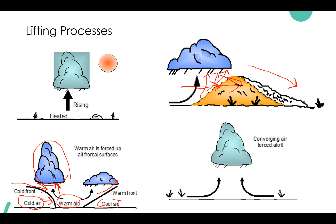In the bottom right we show low-level convergence. You clearly see arrows coming in from both directions. The air meets in the middle and then rises. As these two airstreams converge, the air rises, cooling and condensation of the air parcel results in cloud formation and potentially precipitation.